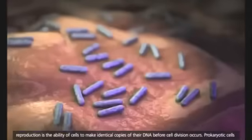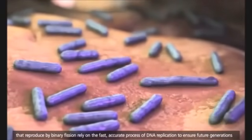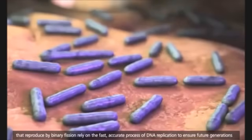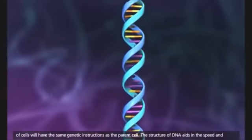Prokaryotic cells that reproduce by binary fission rely on the fast, accurate process of DNA replication to ensure future generations of cells will have the same genetic instructions as the parent cell.